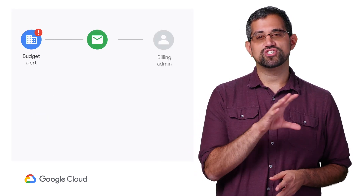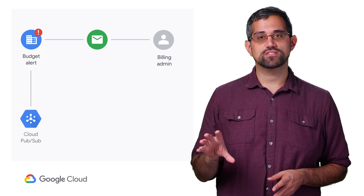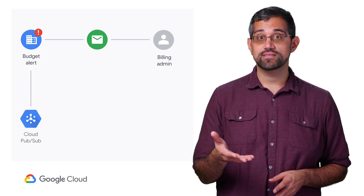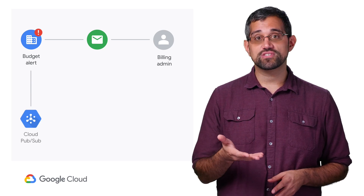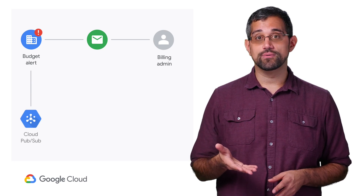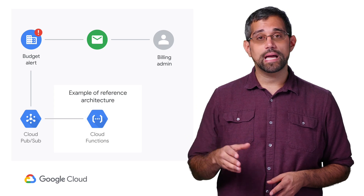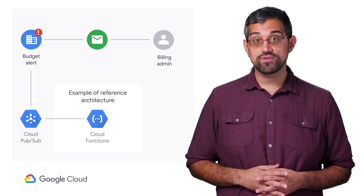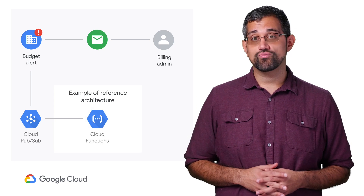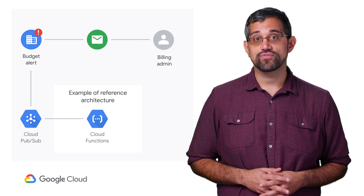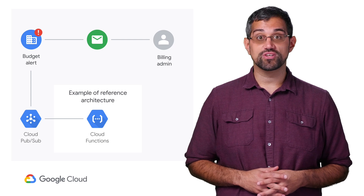If you're not familiar with Pub/Sub, think of it as a simple message handler which passes on any events, such as budget updates, to any services that are subscribed to it. Cloud Functions is a lightweight, serverless way to run code, and it's an ideal solution for quickly handling budget alerts.